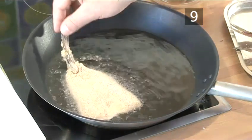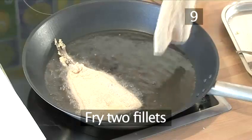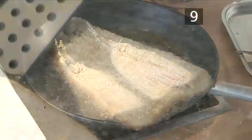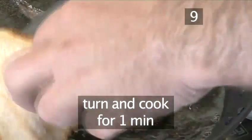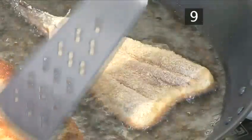When the oil is very hot, add two of the fillets and fry one side until golden brown, flip them over and fry the other side for a further minute, then remove.